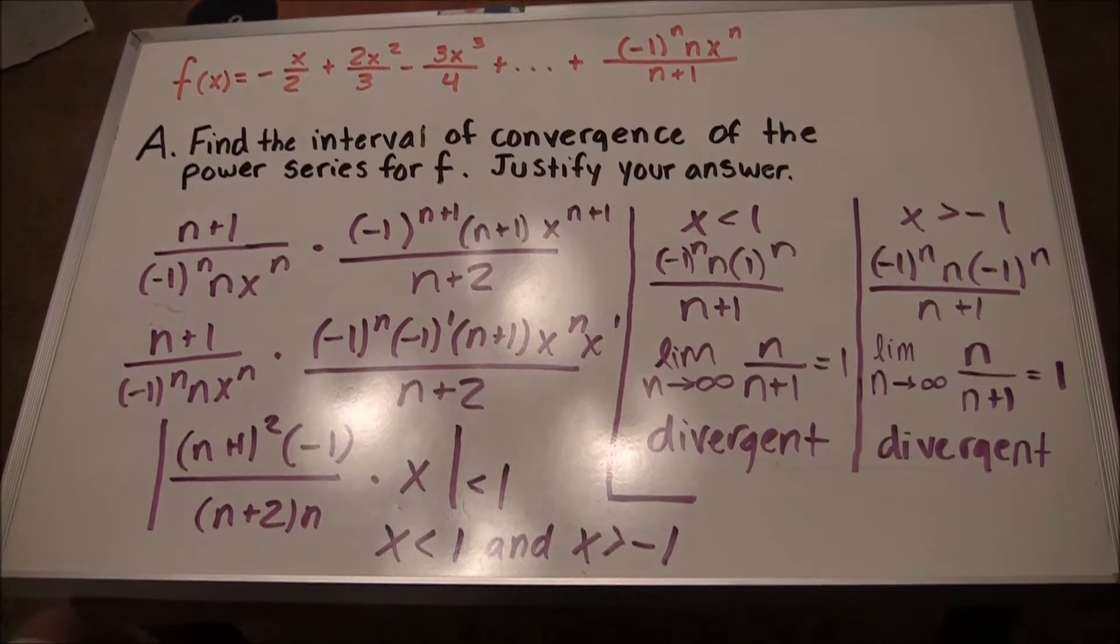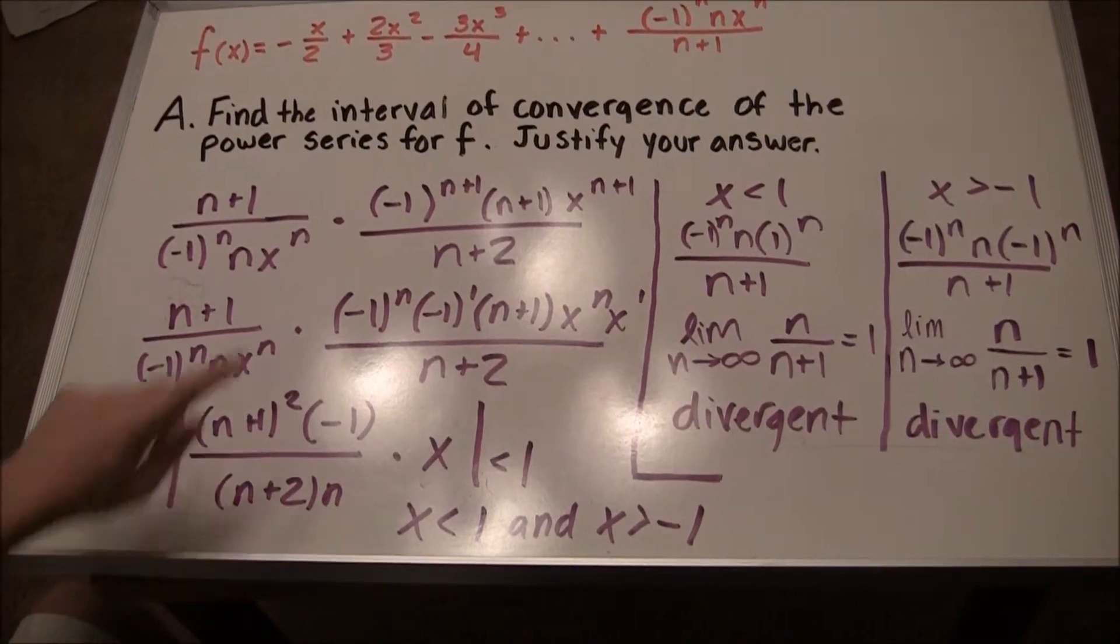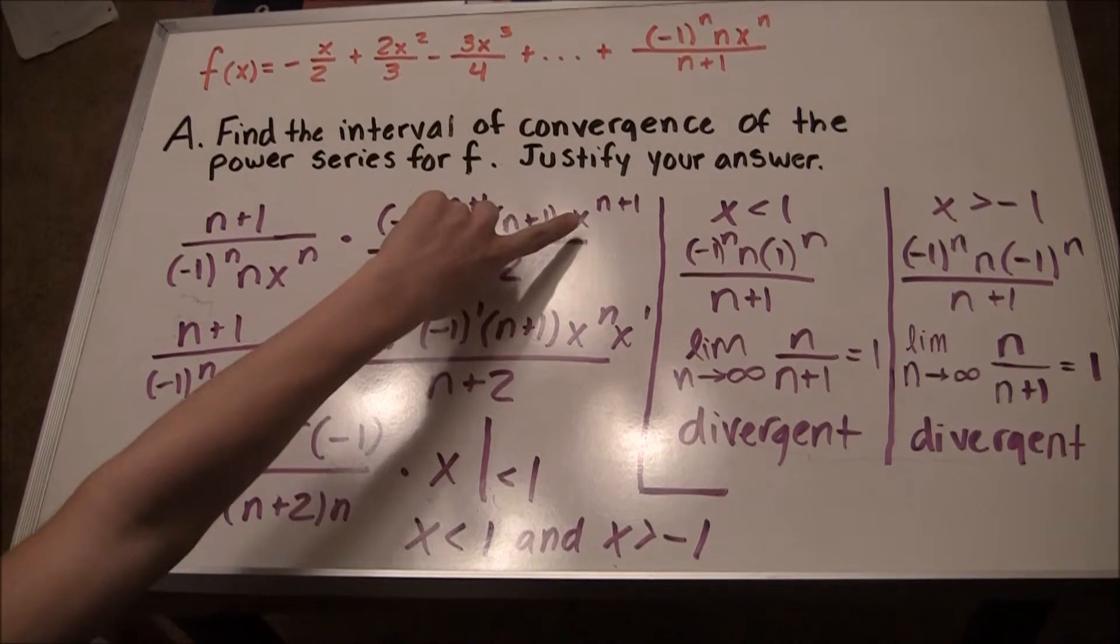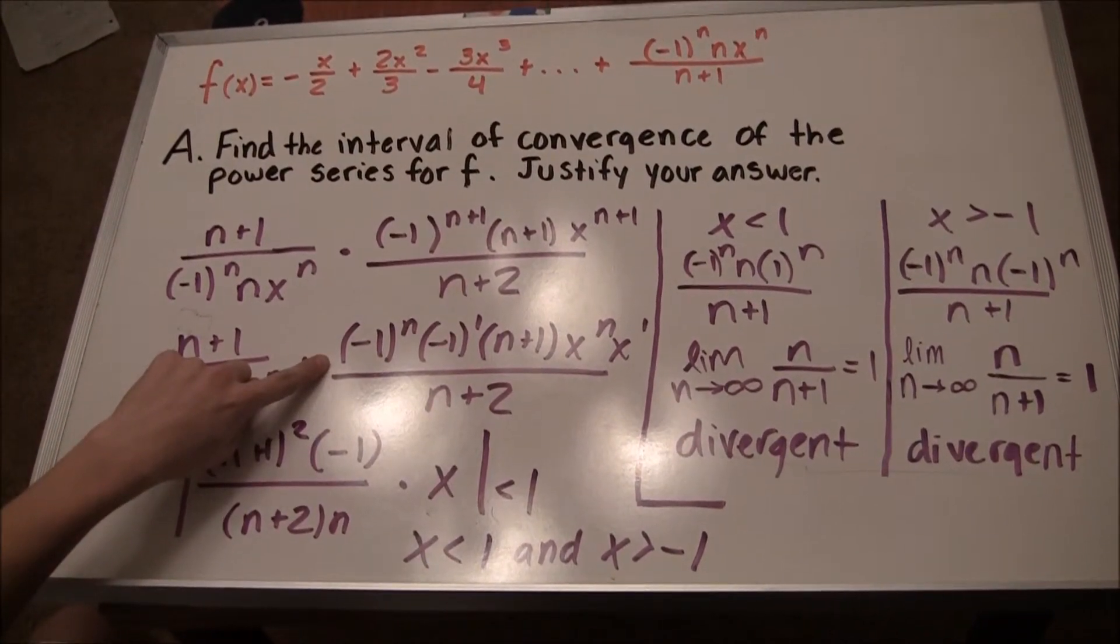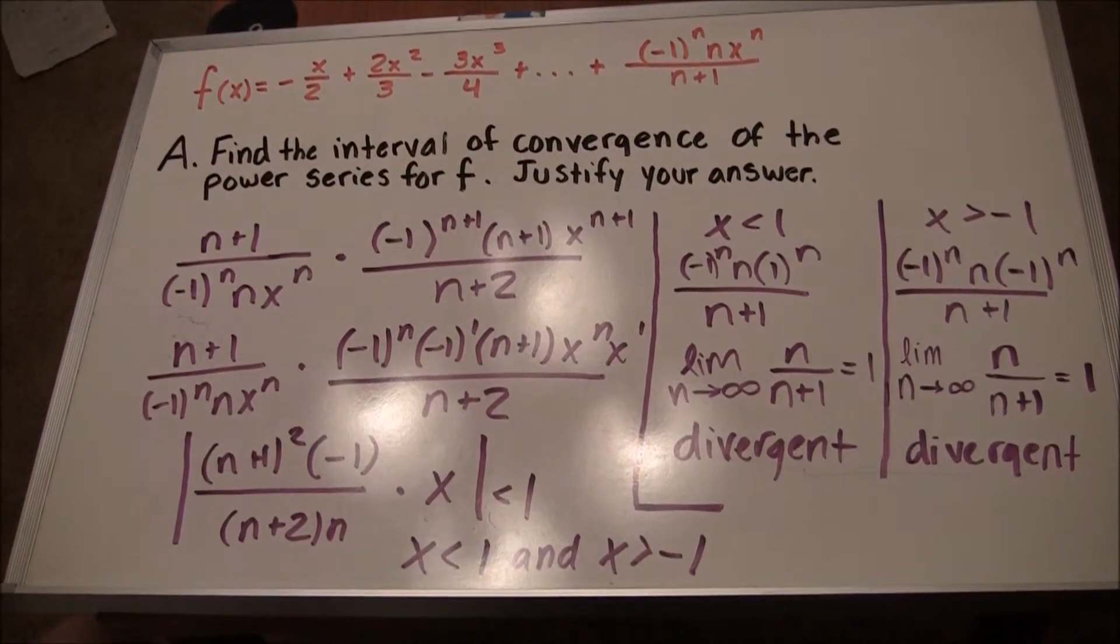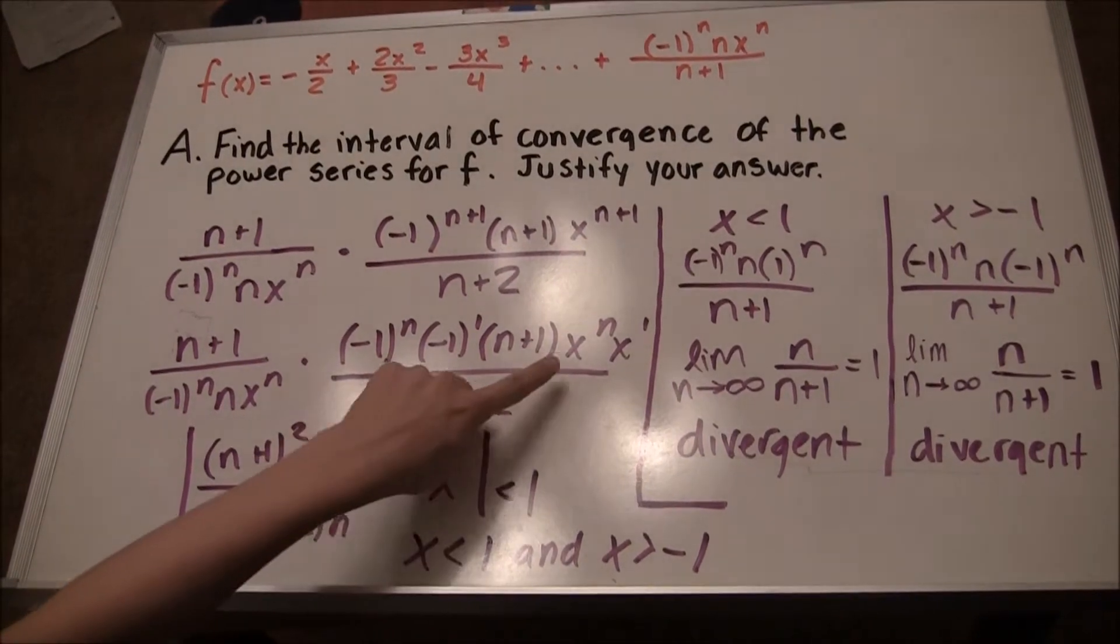To simplify this equation, negative 1 to the n plus 1 power and x to the n plus 1 power can be separated to negative 1 to the nth power times negative 1 to the first power and x to the nth power times x to the first power, respectively.